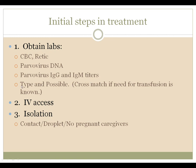Type and crossmatch: you may or may not need to transfuse this person. If you already know their hemoglobin is low or they're clinically symptomatic, go ahead and order a type and crossmatch. They're going to need IV access and at least maintenance fluids depending on the plan for transfusion. And they're going to need very strict, hardcore isolation — contact, droplet, and no pregnant caregivers.